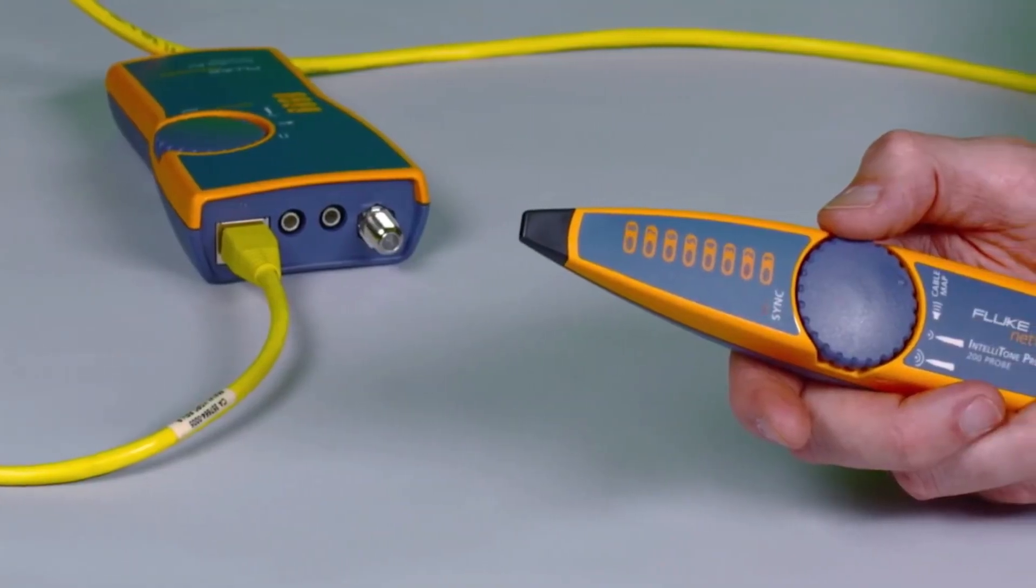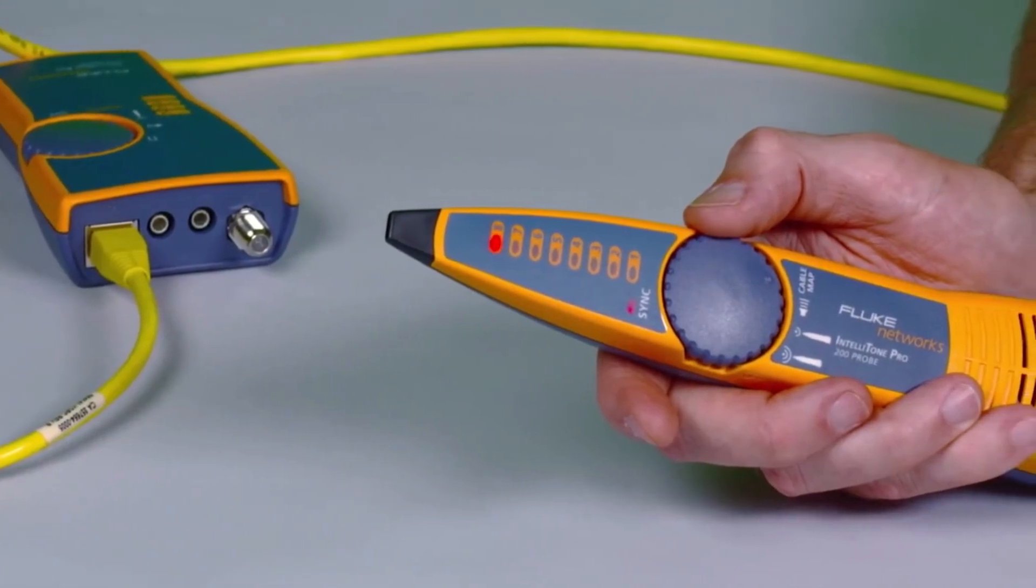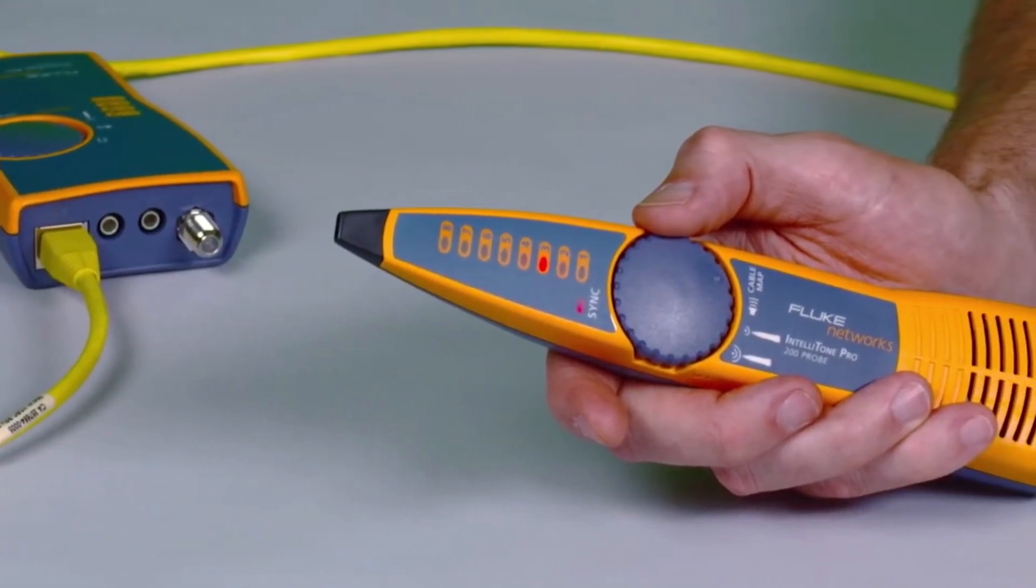Validate wire maps in a flash, finding the most common wiring faults on twisted pair cabling, such as shorts, opens, and crossed pairs.